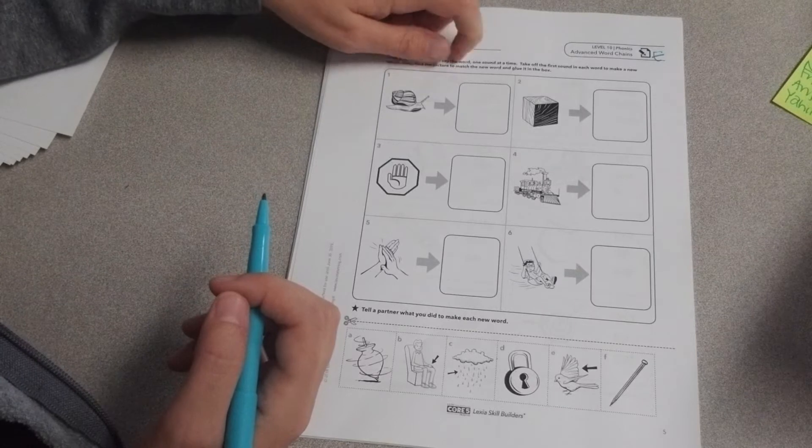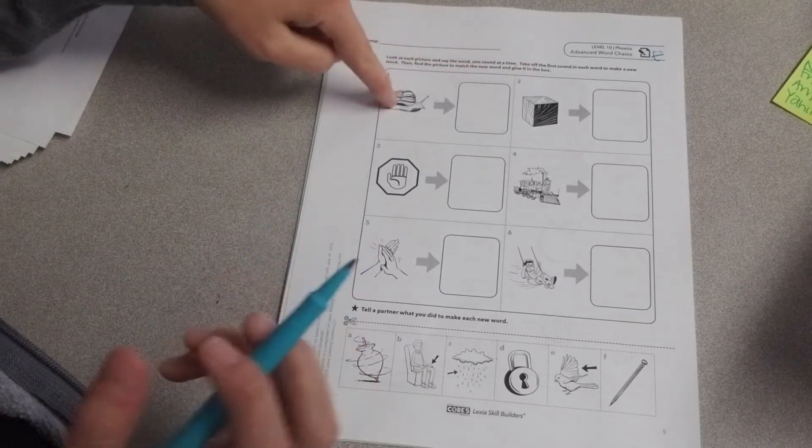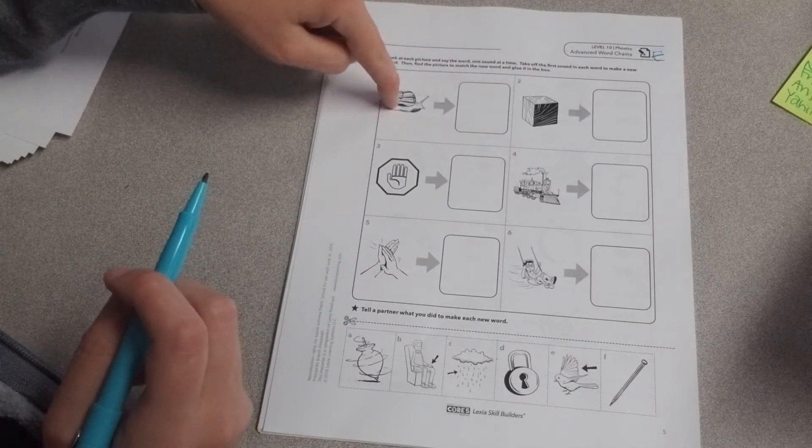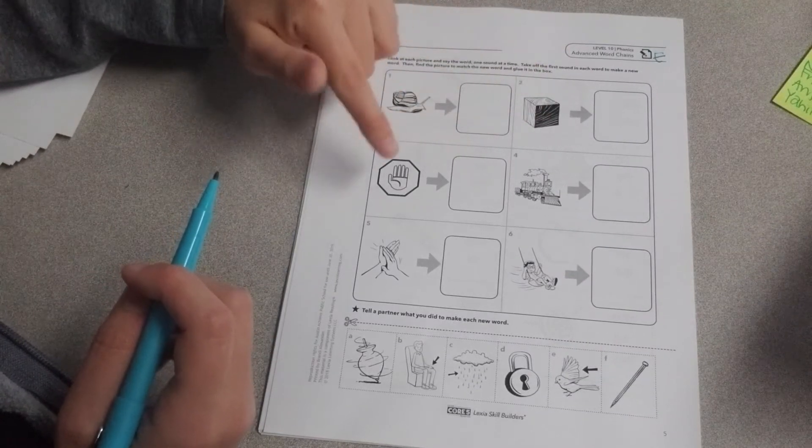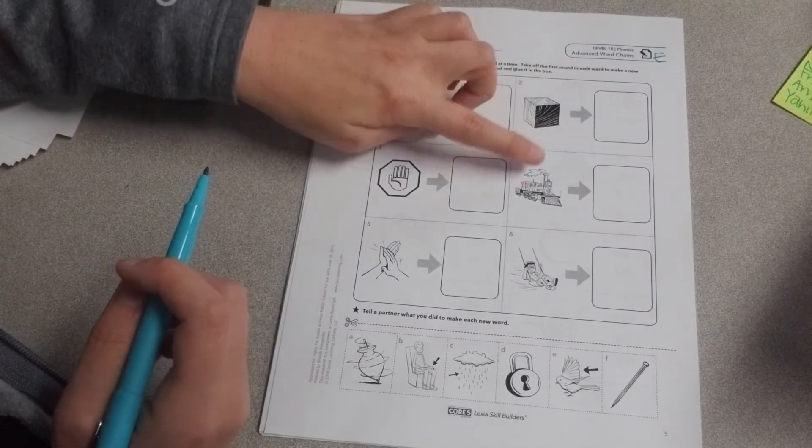Then find the picture to match the new word and glue it in the box. The words are: snail, block, stop, train, clap, and swing. You're going to need scissors and glue for this.